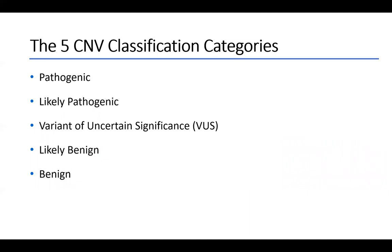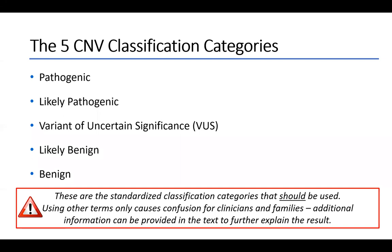It's important when we classify CMVs to use the five categories now defined for copy number variants. This was a change from previous guidelines, which had three categories where variants of uncertain significance were divided into likely pathogenic, benign, or uncertain. We now align with sequence variant interpretation guidelines using five categories: pathogenic, likely pathogenic, variant of uncertain significance, likely benign, and benign. These are the standardized classification categories for both sequence variants and copy number variants. Using other terms only causes confusion for clinicians and families. You can always provide additional information in the text to further explain the result.